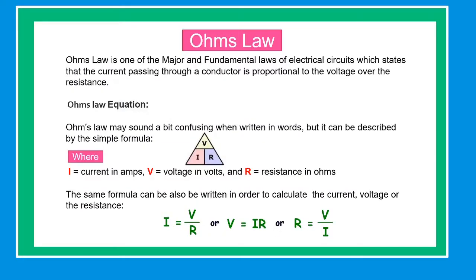Ohm's Law is one of the major and fundamental laws of electrical circuits, which states that the current passing through a conductor is proportional to voltage over the resistance. Ohm's Law equation.